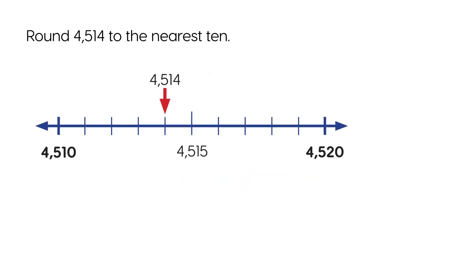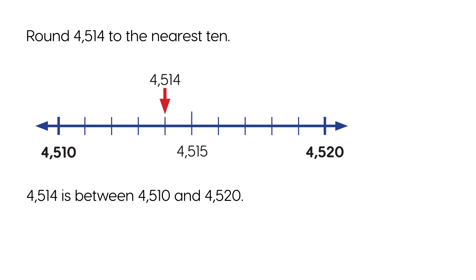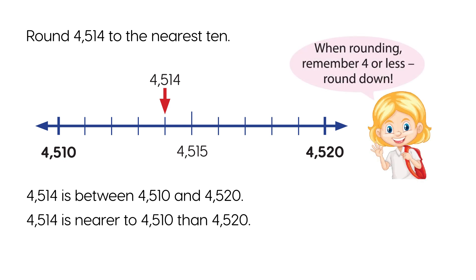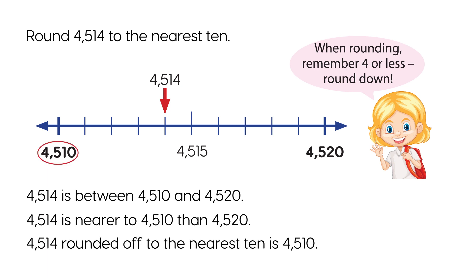Round 4,514 to the nearest ten. 4,514 is between 4,510 and 4,520. 4,514 is nearer to 4,510 than 4,520. So 4,514 rounded off to the nearest ten is 4,510.